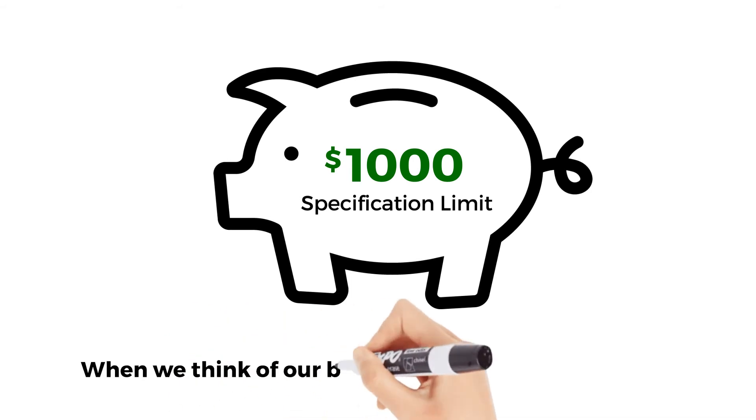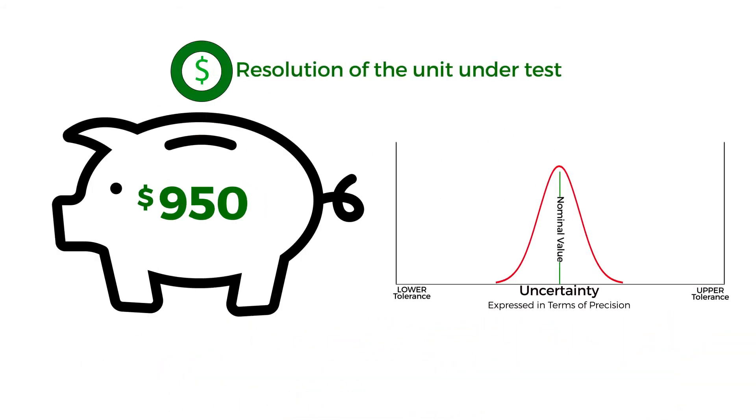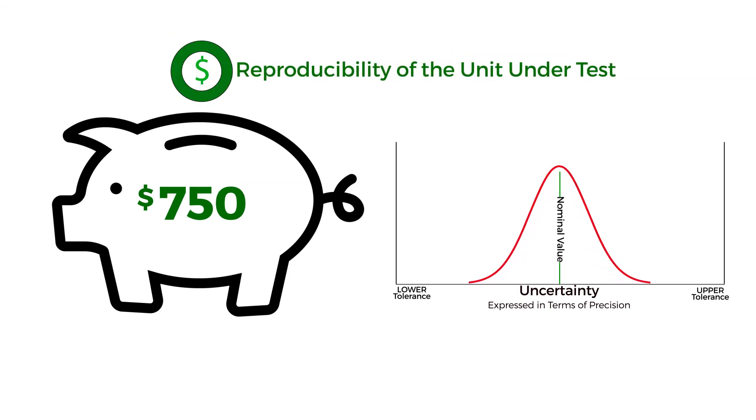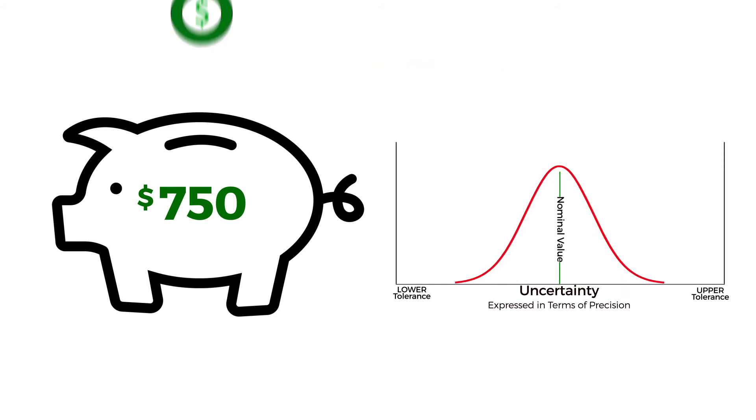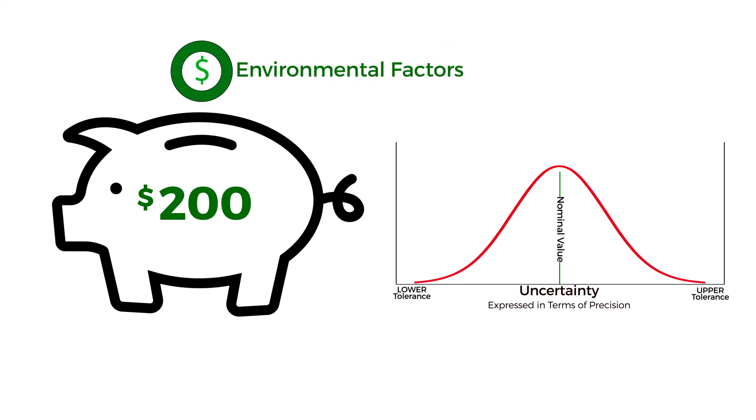When we think of our budget in terms of uncertainty, the expenses are resolution of the unit under test, repeatability of the unit under test, reproducibility of the unit under test, reference standard uncertainty, reference standard stability, environmental factors.